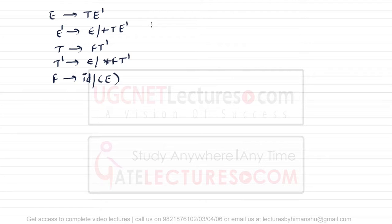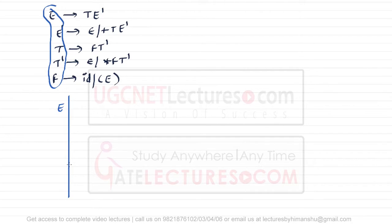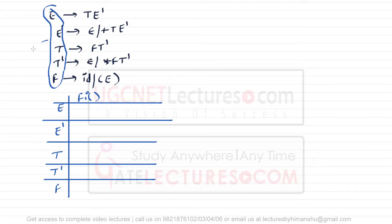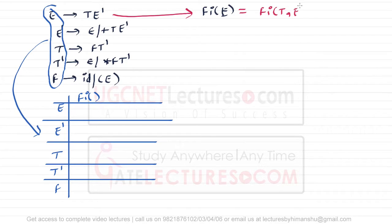We want to find the FIRST of all the left-hand side variables: FIRST(E), FIRST(E'), FIRST(T), FIRST(T'), and FIRST(F). Let's take them one by one. For FIRST(E): since E → TE', we write FIRST(E) = FIRST(T, E').